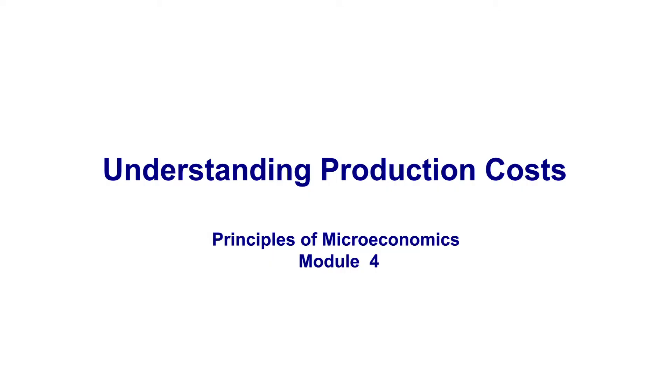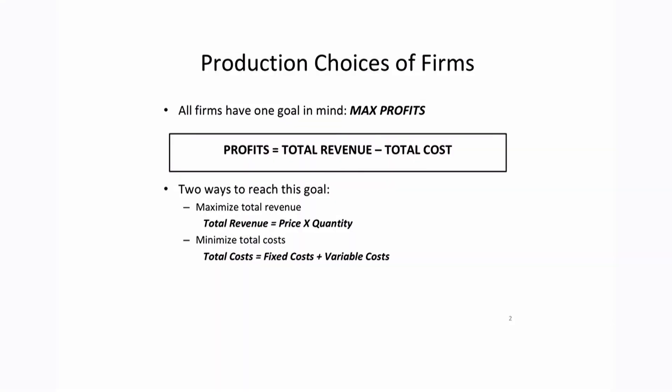Hello and welcome to Principles of Microeconomics. This is Module 4 and we will be discussing production costs. To start off with, when we think about the production choices of firms, all firms are interested in trying to maximize their profits.